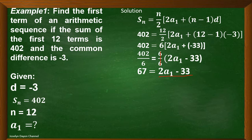So, for a sub 1, we have to transpose negative 33 to the left side of the equation. And this will become 67, negative 33 became positive 33, is equal to 2a sub 1.